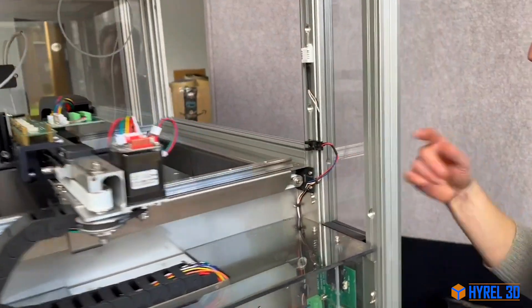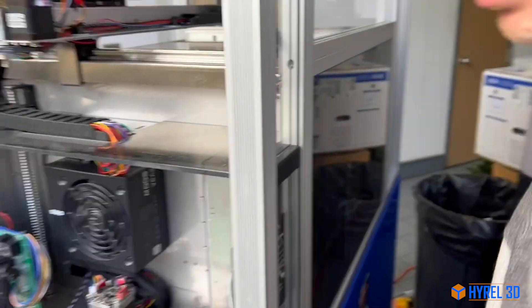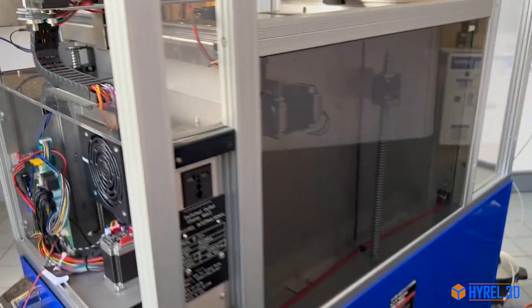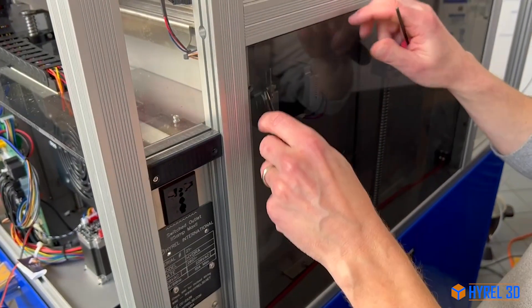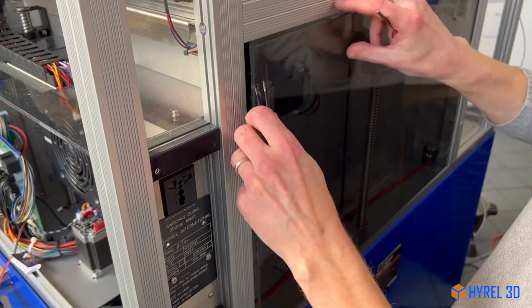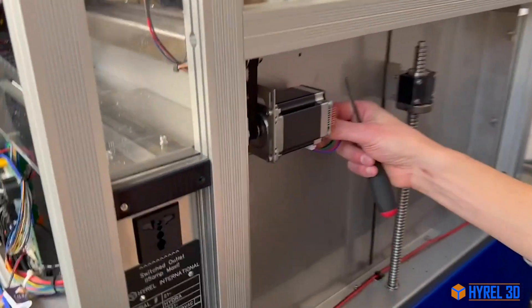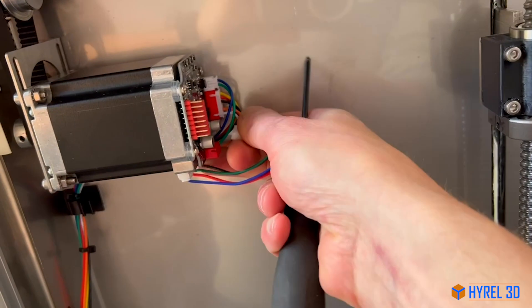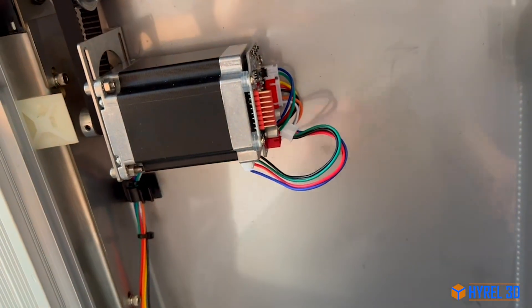There's another motor in the back, and to get to that one, there are two screws covering the back plate. You want to pull this back plate off, and again carefully grasp the connector and remove the wires.